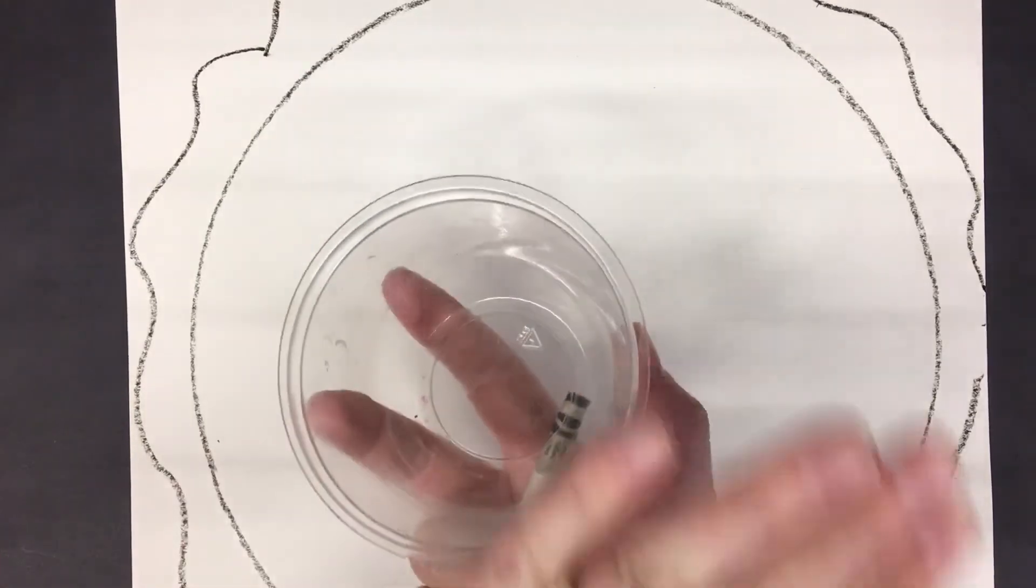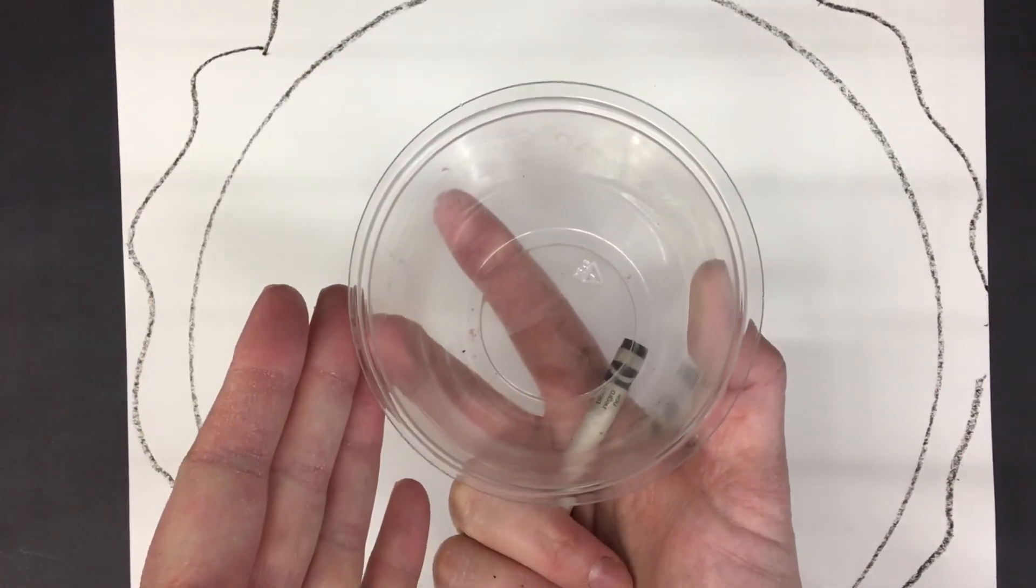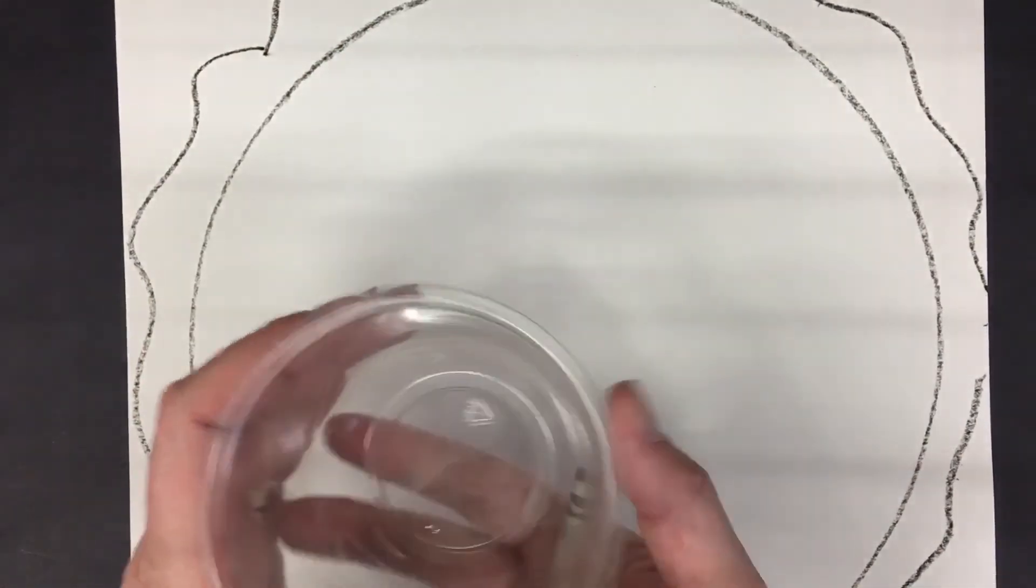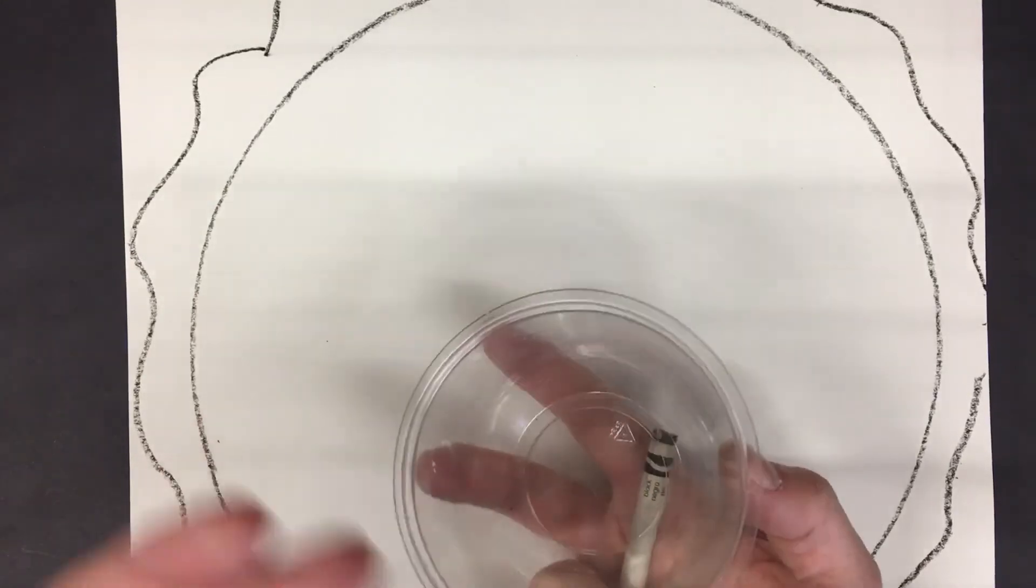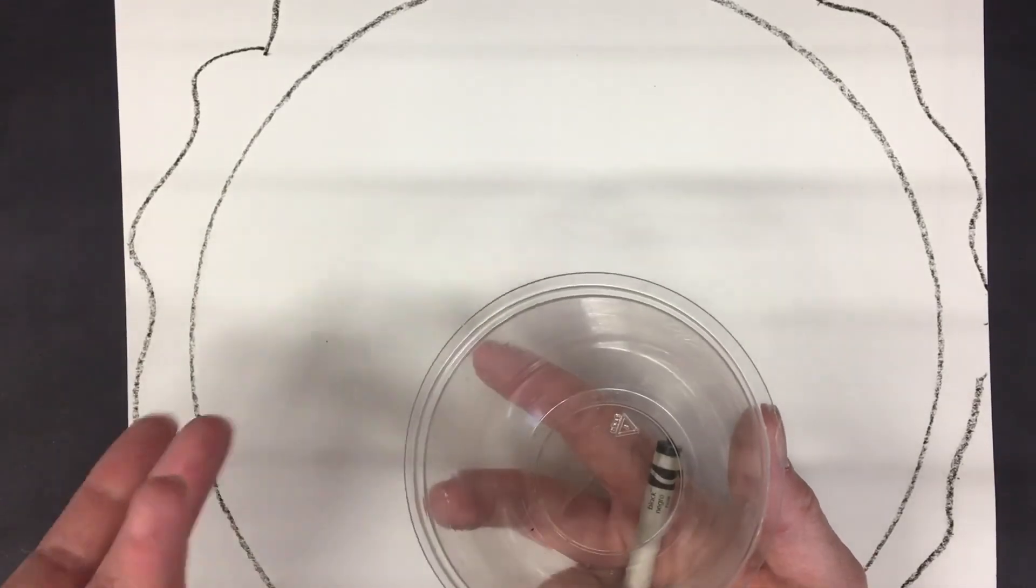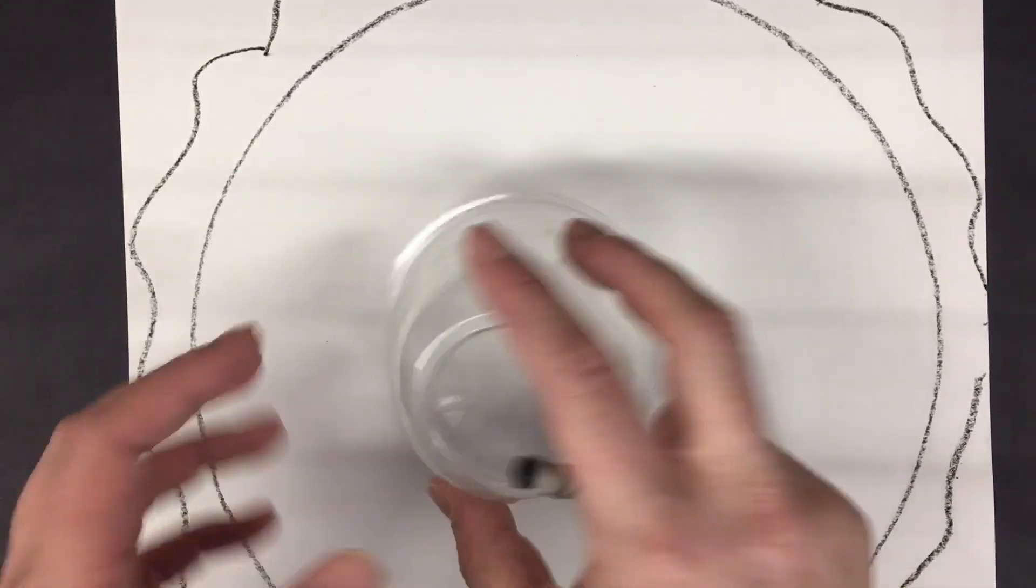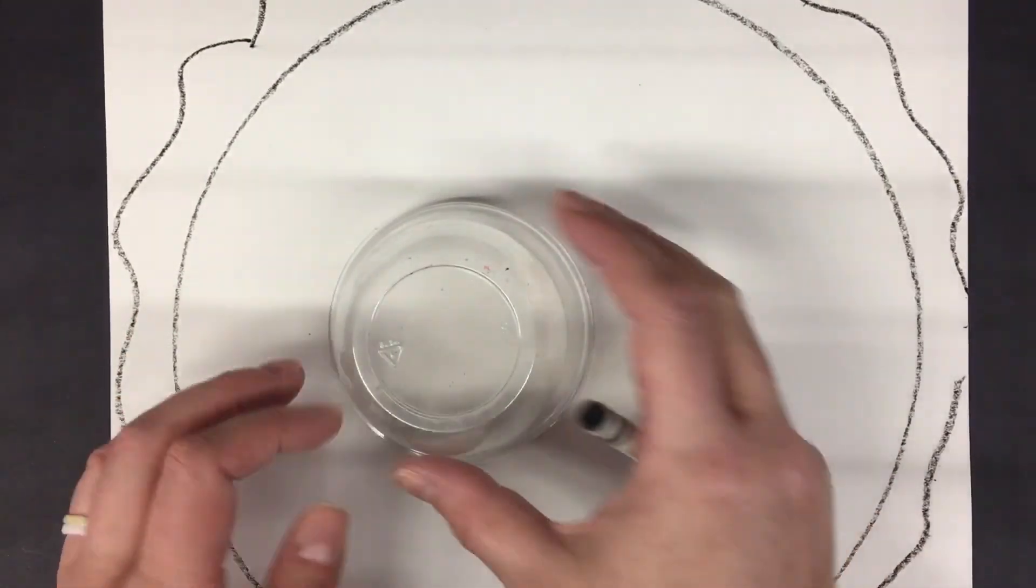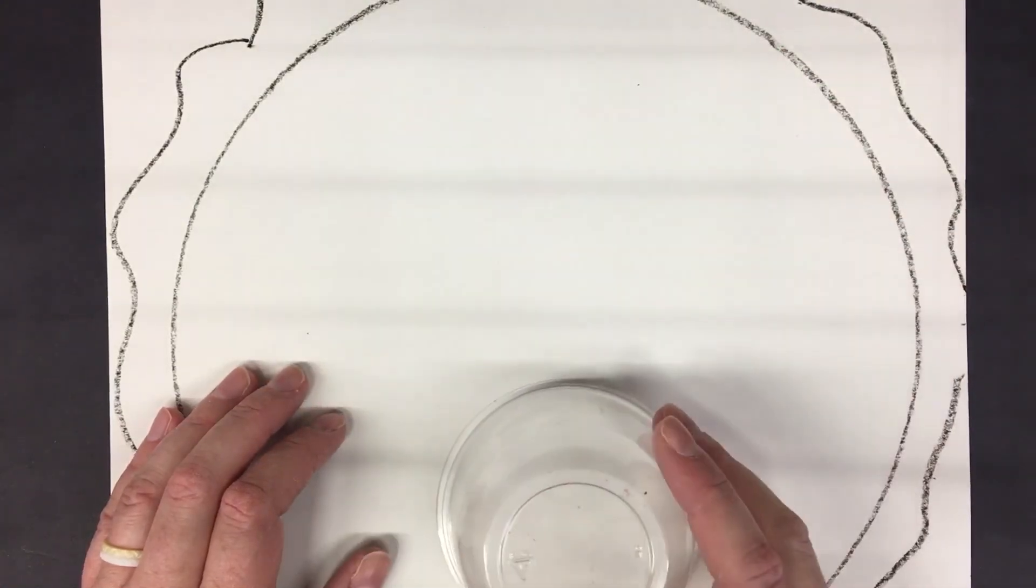Now Ms. Diggs has also gotten you some things that you can trace because what shape are these? They're circles. And when we think about apples or oranges or things that we put into a fruit bowl, we think about what kind of shape would those be? So we're going to use this to create as many apples as we can.